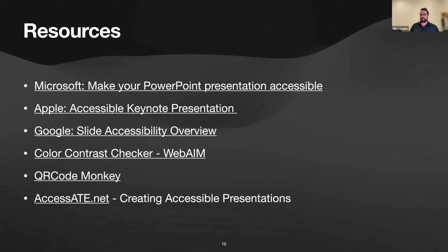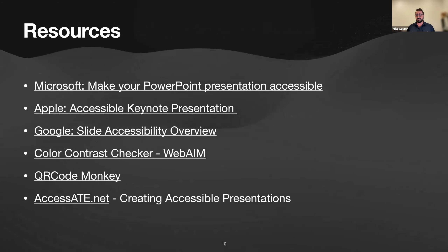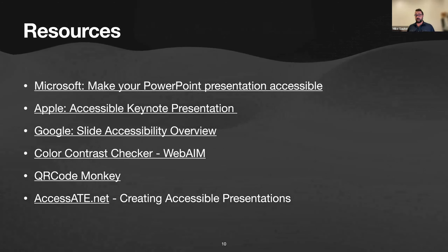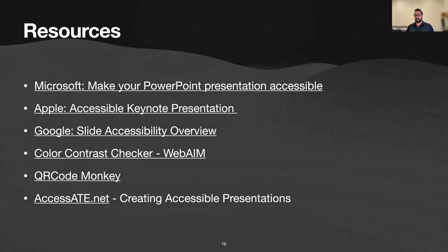I have some resources to share — I'll load them into a Google Doc in the chat so you can download it. There are wonderful resources available for Microsoft PowerPoint accessibility, Apple Keynote, Google Slides, the color contrast checker which we'll go through, QR Code Monkey, and the Access ATE site which has a great resource on presentations as well.